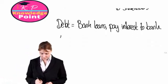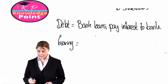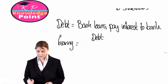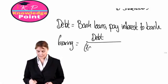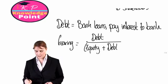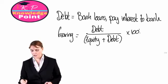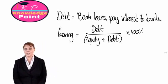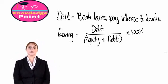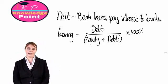So our gearing ratio then: gearing is equal to our debt divided by our equity plus our debt. If we put it in percentage terms, it is telling us what percentage of our financing is debt financing — so things like bank loans.